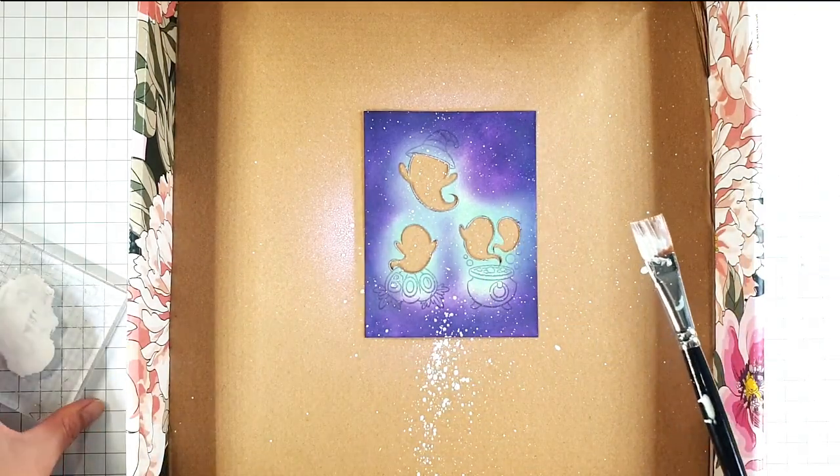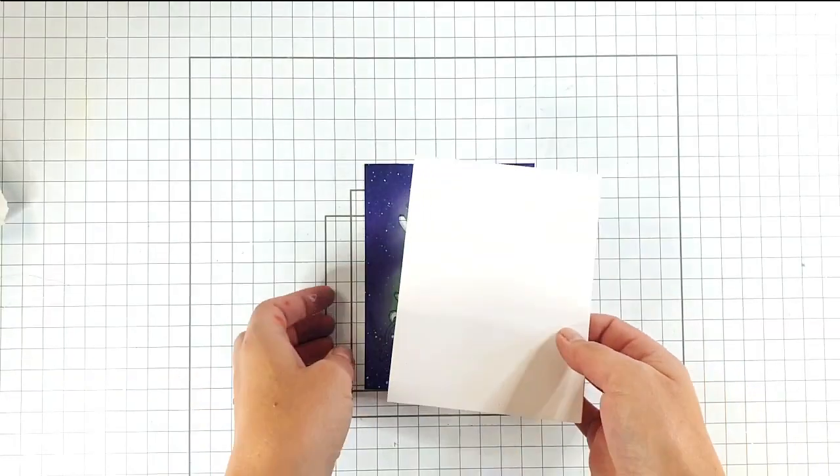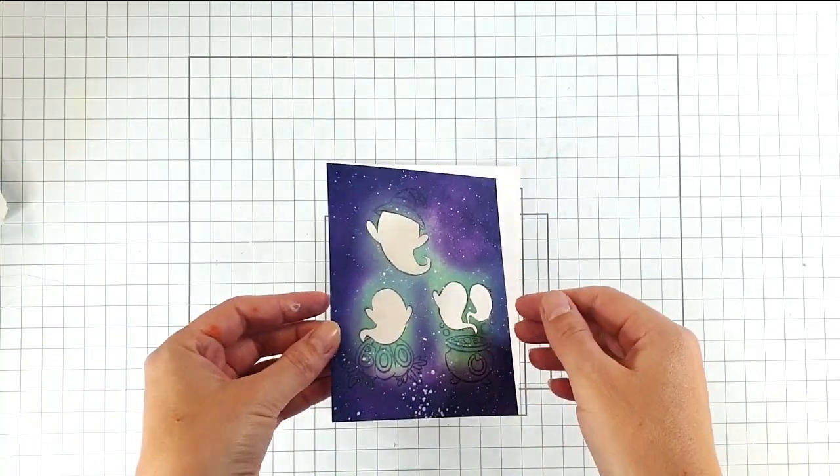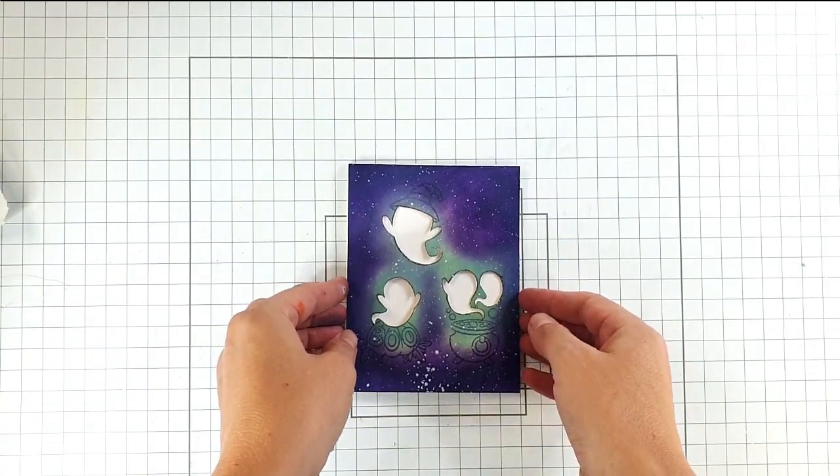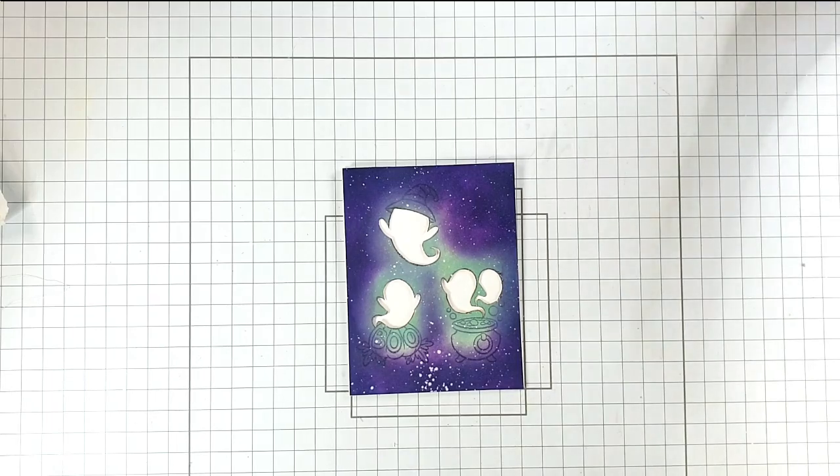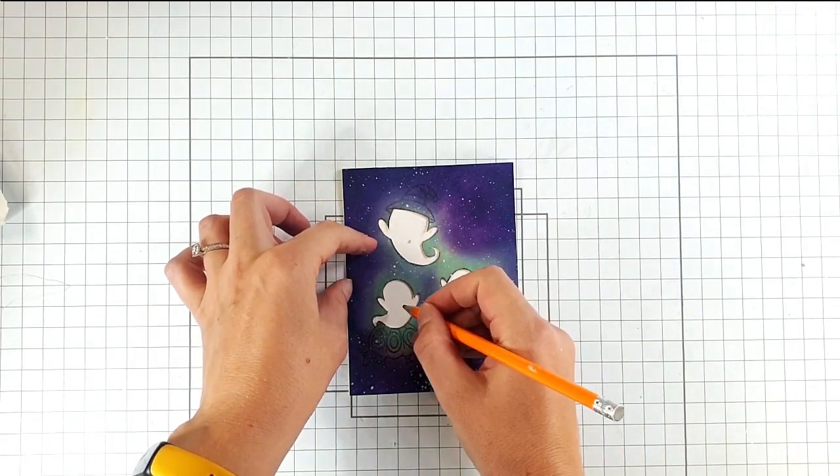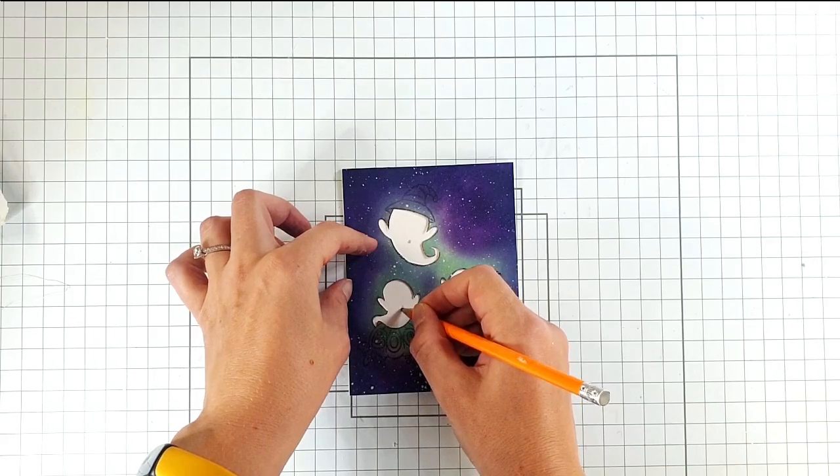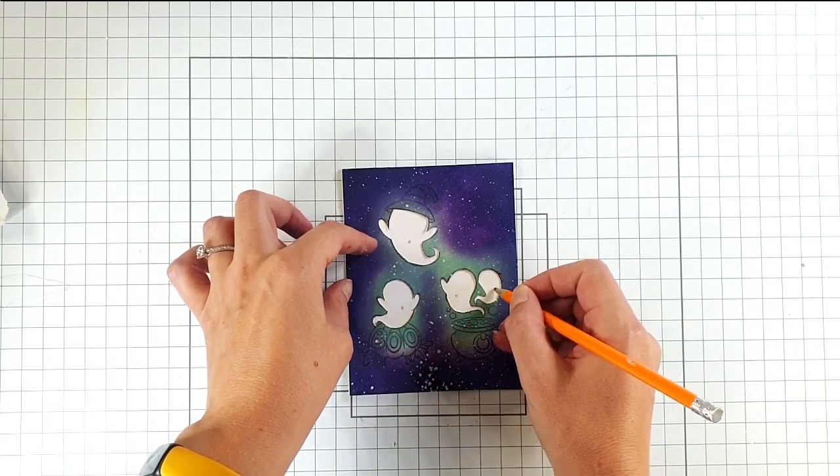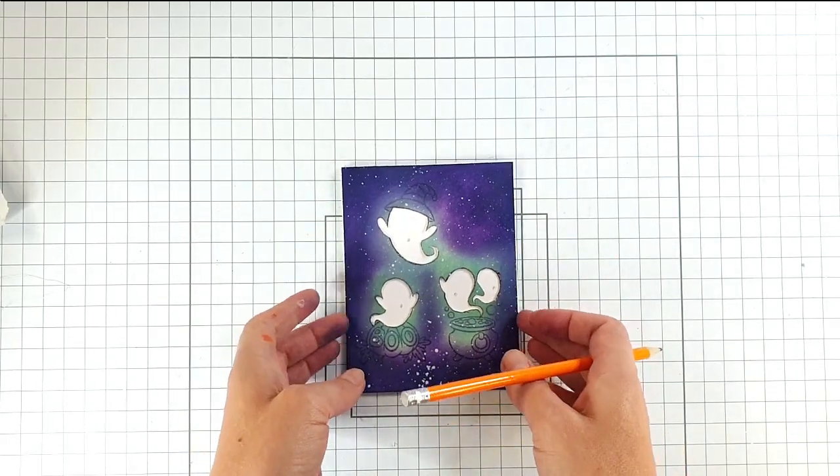And just add a little bit of texture to the background. So then as that dries, I want to build my circuit to light up these ghosts. So I'm going to grab a pencil and I'm just going to add a dot to kind of the middle of each of the ghosts, and that's where my lights are going to go.